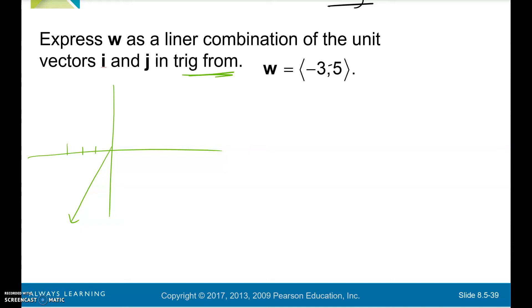Negative 3, negative 5. So if I write it using i and j, not in trig form, well, that's easy. And that's my little arrow. That's how I'm denoting vector. Those are vectors. 3 and 5, negative 3, negative 5 are scalars. So that's what I have graphed. I have graphed W over here.